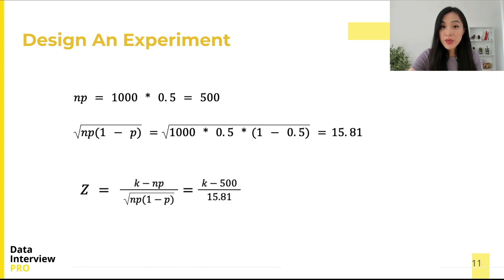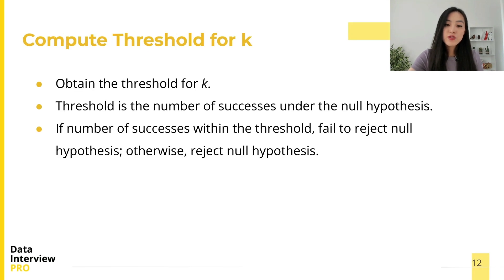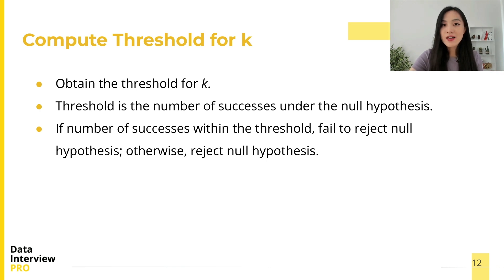Now we can compute the mean and standard deviation of the number of heads under the null hypothesis, and plug them into the formula for the test statistic. The next step is to get the threshold for the observed number of successes k. We can define success as heads or tails — either way, the threshold is a number of successes under the null hypothesis.